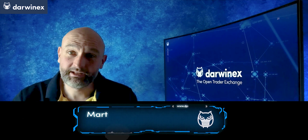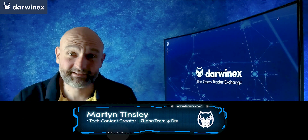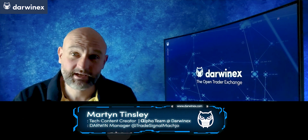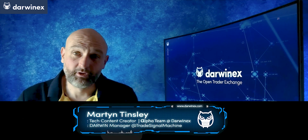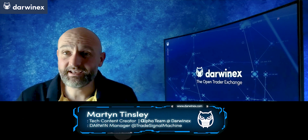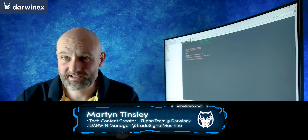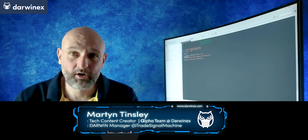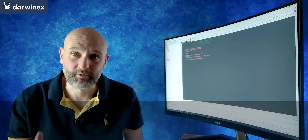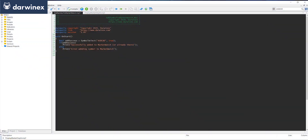Hi guys, this is going to be a really quick video — in fact the quickest video I've ever made. It involves a really simple coding technique that allows you to add symbols to the market watch window in code, and this can be particularly useful if, like me, you have a multi-symbol EA.